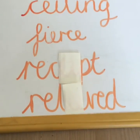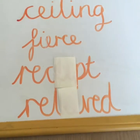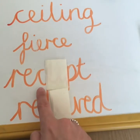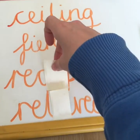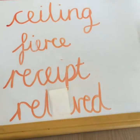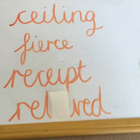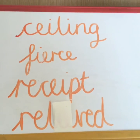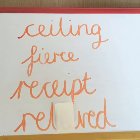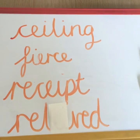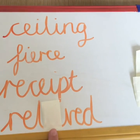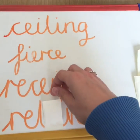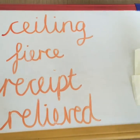Next one is receipt. If you go to the shop you would get a receipt to show what you've bought. It comes after a C, so it would be EI because you switch the letters around. The last one is relieved. If you're pleased about something — oh thank goodness that was over, I'm so relieved — here's the E sound and it's after an L, so is it IE or EI? It is IE.